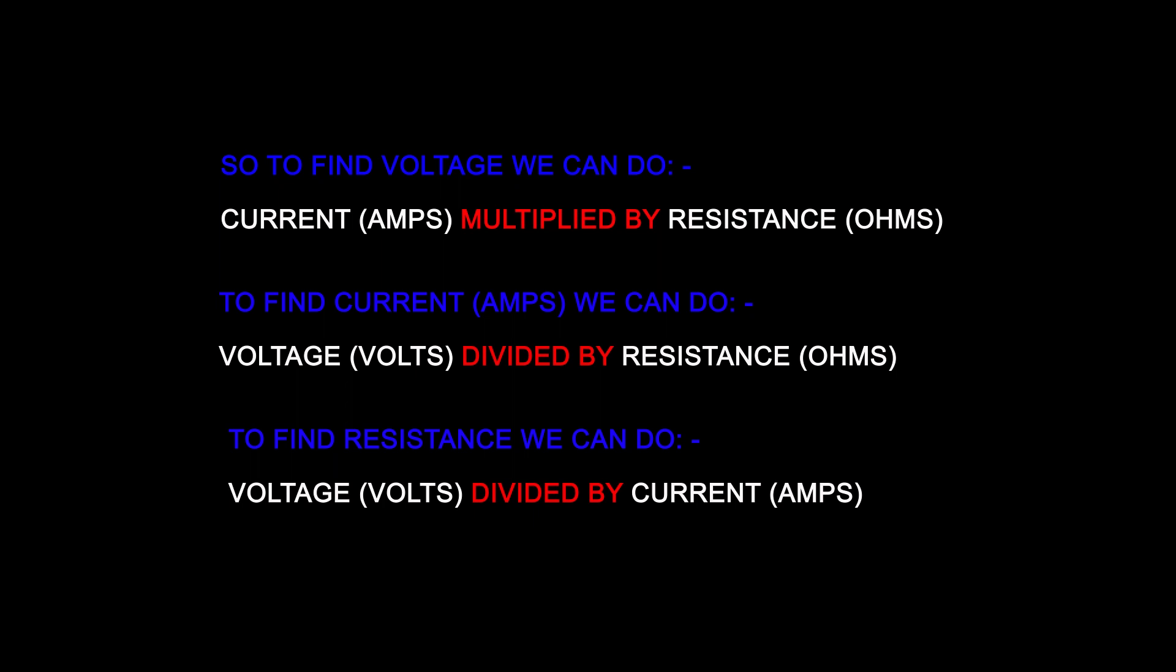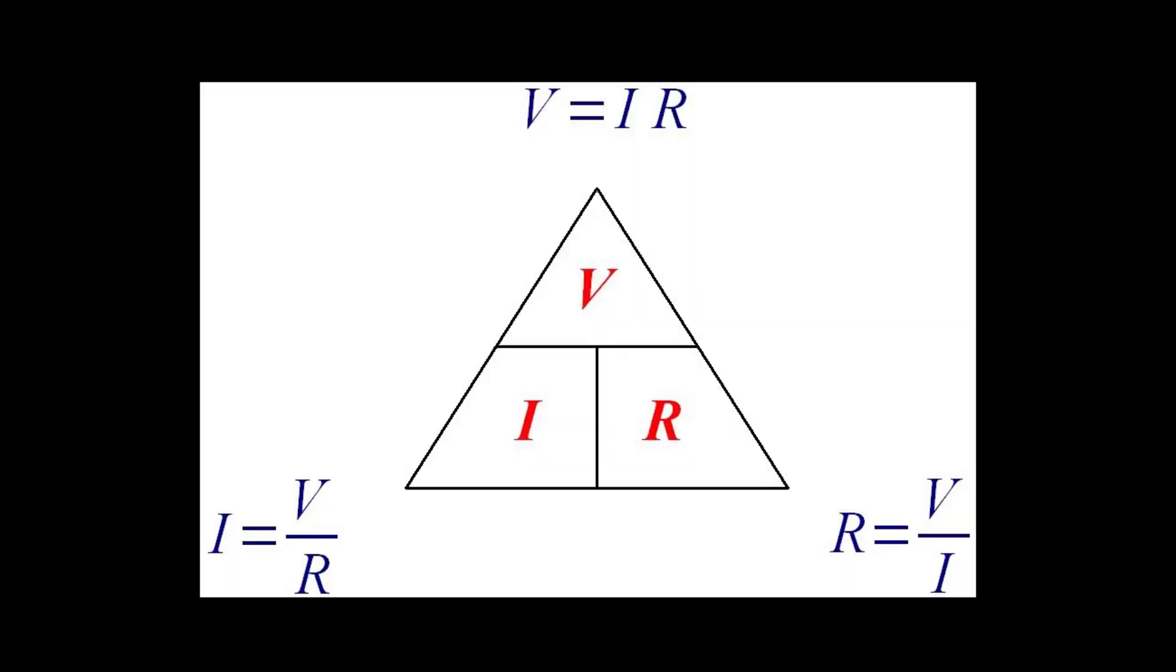To make life easier we can use the magic Ohm's law triangle. This is V over I times R and if we want to find out any of the values we just cover one up. If we wanted to find voltage we cover that up with our thumb and it gives us I times R. If we wanted to find current which is I we cover up the I and it shows V over R. Similarly if we want to find resistance we cover up the R and it gives us V divided by I.